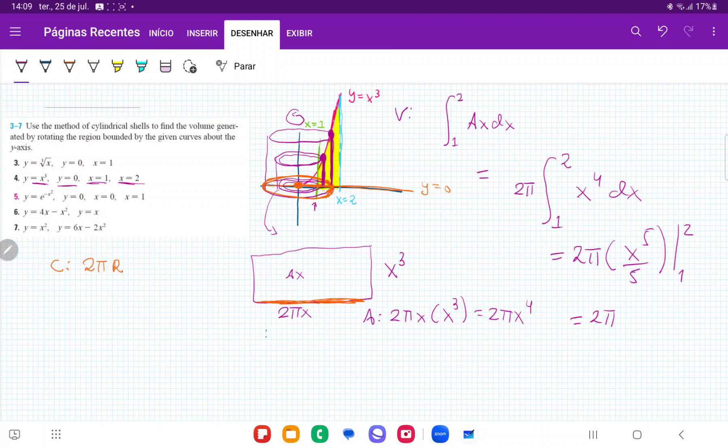which is equal to 2π times, let's see, two to the power of five is 32 fifths minus one fifth. So this gives us 2π times 32 minus one over five is 31 fifths,